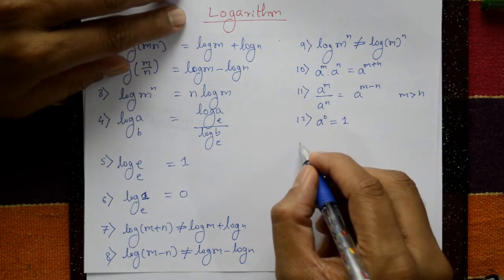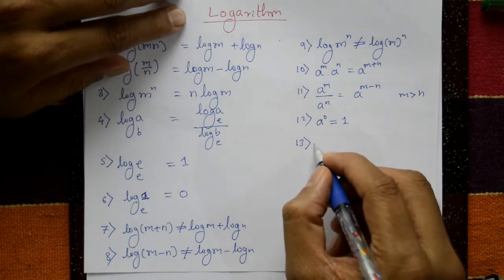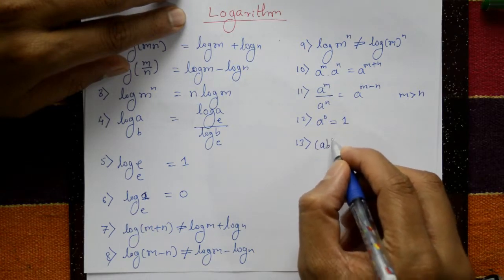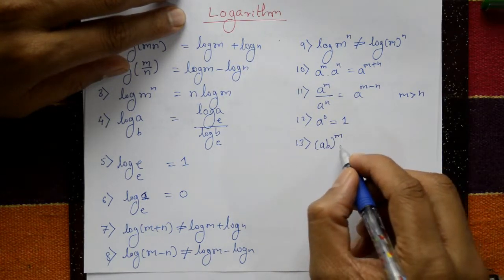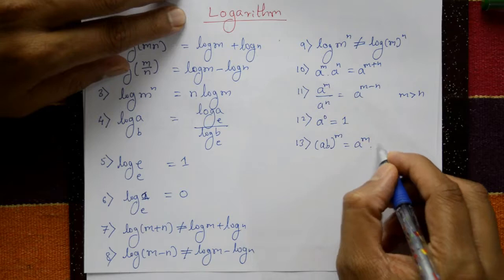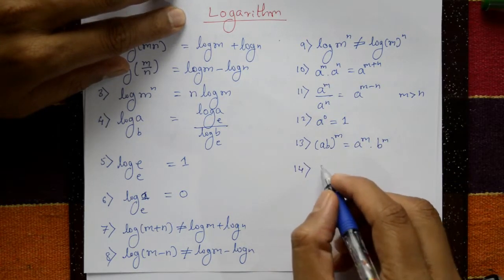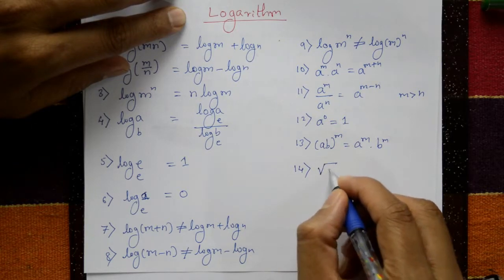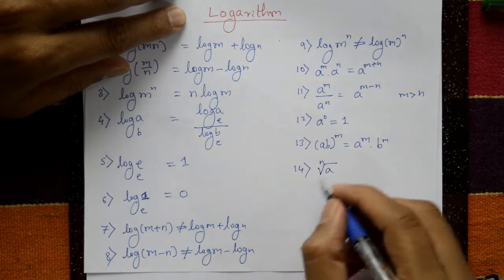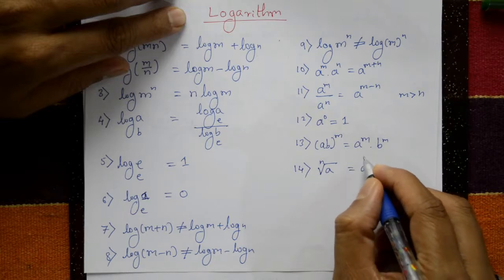Next, ab raised to m. Now a raised to m times b raised to m. Next, square root of a, nth root, you can write a raised to 1 by n.